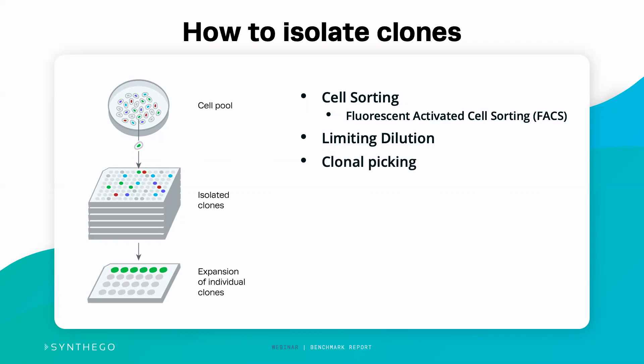We can also do clonal picking, where we physically seed cells at very low density so they form colonies on their own, and then manually pick cells off the plate. This is popular in the iPSC world. However, cells are very motile — they move around the plate — so we don't recommend clonal picking because you can get a lot of cell contamination between different colonies even if they're far apart. We recommend something that physically separates the cells. Newer techniques such as cell printing can increase percentages, but require specialist hardware. If you do a lot of clonal isolation, it's a good option to look into.